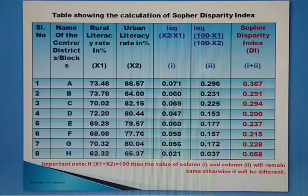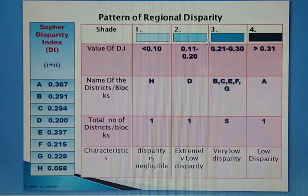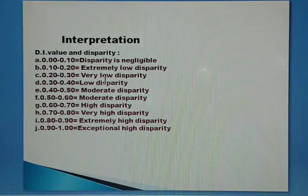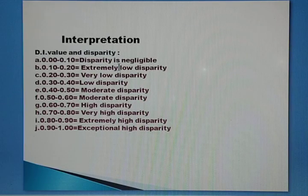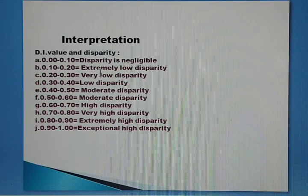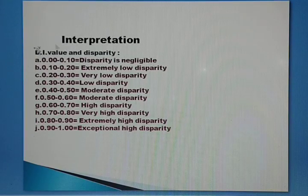Based on the DI values, we assign regions to zones. The classification table is: DI value 0.00–0.10 represents very negligible disparity; 0.10–0.20 represents extremely low disparity; and so on. Using this table you can easily create the zone classification.